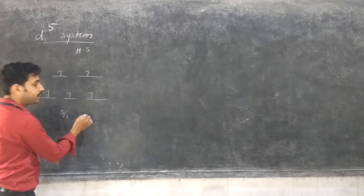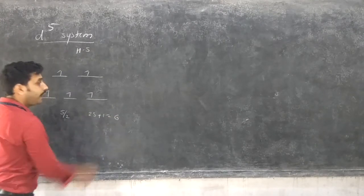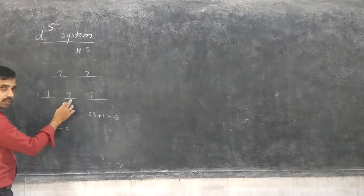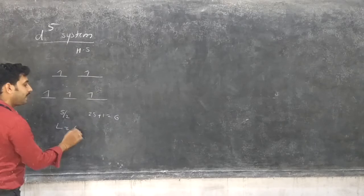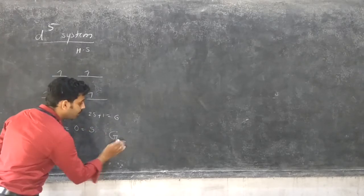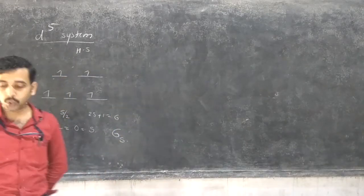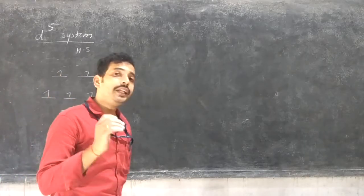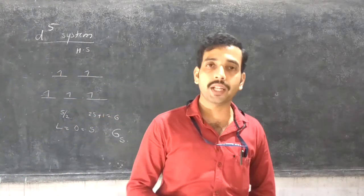The L value calculation gives: 2, 3, 3-1=2, 2-2=0, so L equals 0, which corresponds to S. Therefore, the ground state term is 6S in the high spin complexes. There is no d-d transition in the D5 system, which is why it is a spin-forbidden transition.